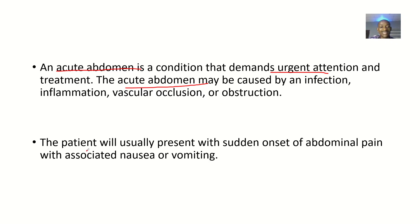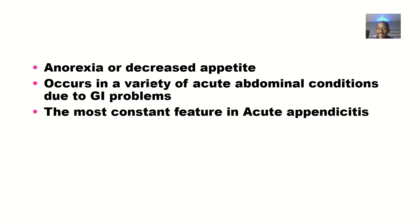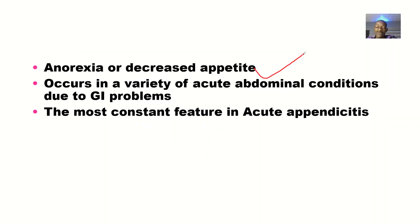In acute abdomen, the patient will usually present with sudden onset of abdominal pain associated with nausea and vomiting. Anorexia — loss of appetite — occurs because when you are feeling so much pain, you concentrate on the pain rather than eating. So automatically, if you have a stomach upset, you don't really want to eat much. This anorexia will occur in a variety of acute abdominal conditions due to gastrointestinal problems.